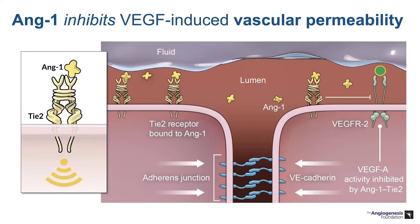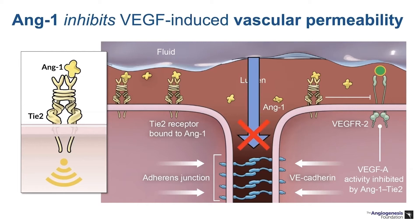Angiopoietin 1 also inhibits VEGF-induced vascular permeability. Introducing VEGF and its receptor VEGF transmembrane receptor 2 mediates a breakdown of vascular stabilization. But in the presence of TIE2 activation with ANG1 bound, you can see inhibition of that VEGF-driven vascular permeability, because TIE2 drives stabilization of VE-cadherin and the adherence junctions, allowing an intact cell-to-cell tight junction and preventing egress of fluid from the capillaries into the extravascular space.